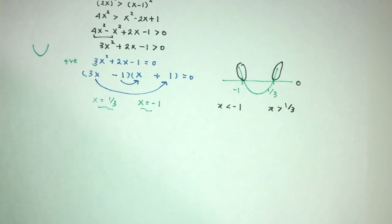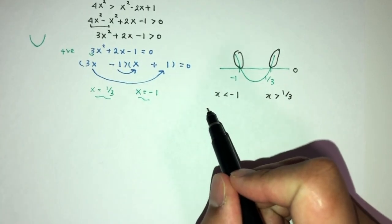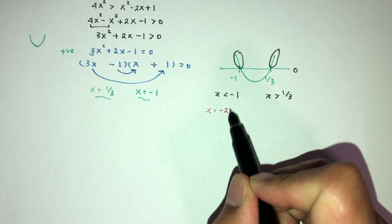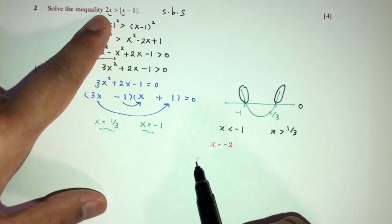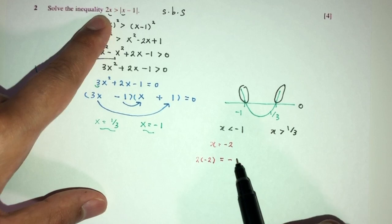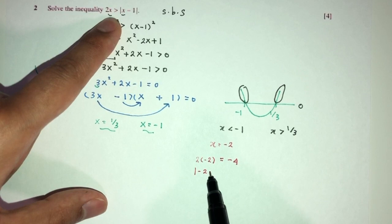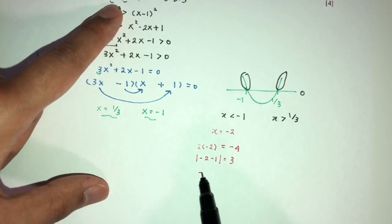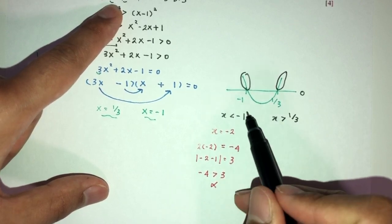Now, we have to check the values if they actually apply or not. For example, I will choose, let's try x equal to minus 2 on this side. We'll place back in here. You will have 2 times minus 2 is what? It is the value of minus 4. And then, here we have minus 2 minus 1 is the value of 3. You would say, well, is minus 4 more than 3? The answer is no. So, we cannot take this one.